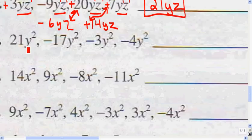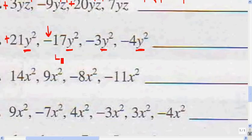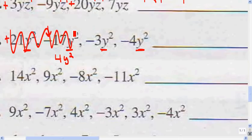Here I have y squared, y squared, y squared, y squared, y squared — they're all like terms, so I can combine all of them. 21 minus 17: one is positive and one is negative, so I subtract. 21 minus 17 is 4y squared. It's positive because 21 was the bigger number and it was positive.